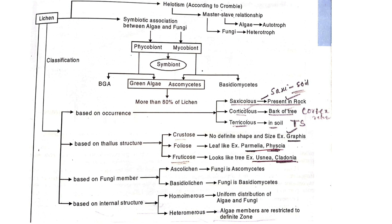According to other scientists, there is a symbiotic association between the phycobiont and mycobiont, where the phycobiont may be a blue-green alga or green alga, and the mycobiont may be an Ascomycete or Basidiomycete.